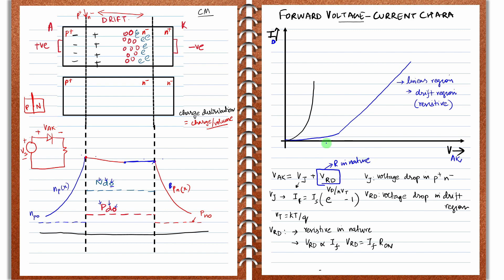The point beyond which the current starts to increase is called the cut-in voltage, which is equal to VJ. However, the total VAK for a particular current value is not equal to VJ alone, but is VJ plus VRD. So the VAK value in a power diode is a little bit higher than in a normal signal diode, where VAK is approximately equal to VJ. That is the major difference — power diodes have a linear region in their operating characteristics.